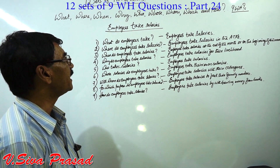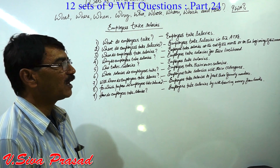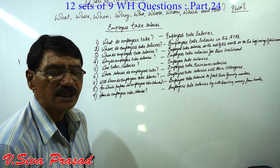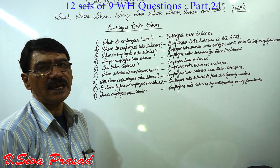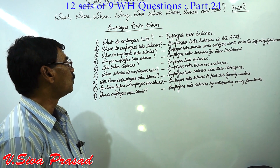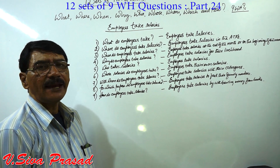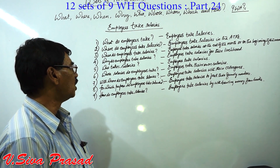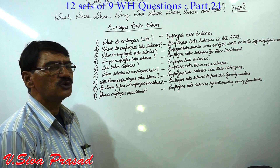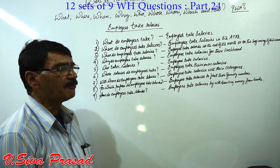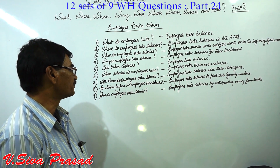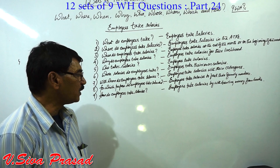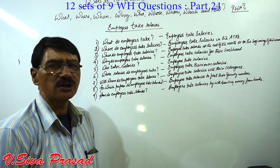Set 3 — Simple Future: What will employees take? Employees will take salaries. Where will employees take salaries? Employees will take salaries in ATMs. When will employees take salaries? Employees will take salaries at the end of the month or at the beginning of the month. Why will employees take salaries? Employees will take salaries for their livelihood. Who will take salaries? Employees will take salaries. Whose salaries will employees take? Employees will take their own salaries. With whom will employees take salaries? Employees will take salaries with their colleagues. For which purpose will employees take salaries? Employees will take salaries to feed their family members. How will employees take salaries? Employees will take salaries by withdrawing money from the banks.